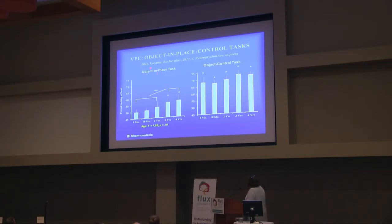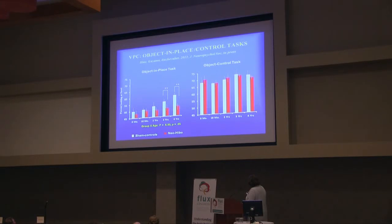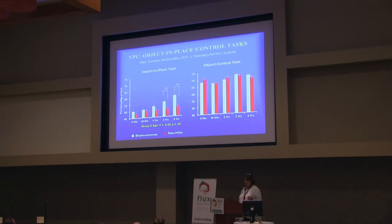If you look at the object-in-place task, you can see that performance is at chance up to two years. It's only around three years of age that they start performing above chance level — this is a significant finding. When you look at the animals with neonatal lesions, they perform quite well at short delays on the object control task, but show impairment when they reach three and four years of age. This follows the pattern of development of the two different circuits — of course this is correlation, not causation — but it seems quite interesting that it follows the morphological maturation of the hippocampus.